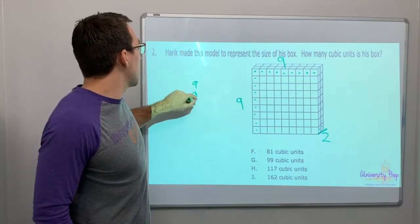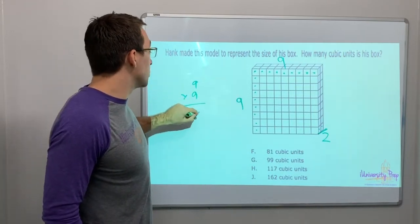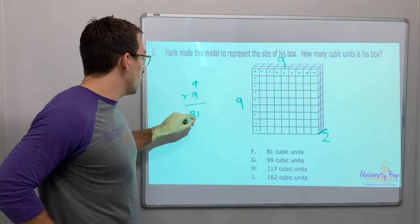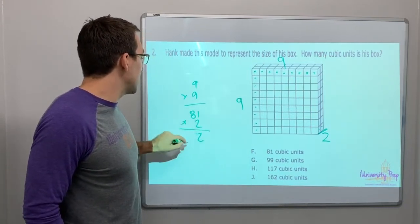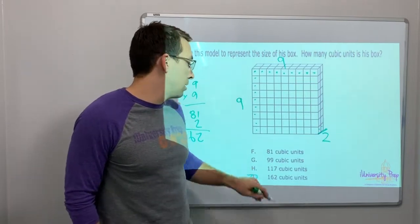So, let's do this. Nine times nine is 81, because we know our times tables. Eighty-one times two is two. Two times eight is sixteen. One sixty-two. Bingo.